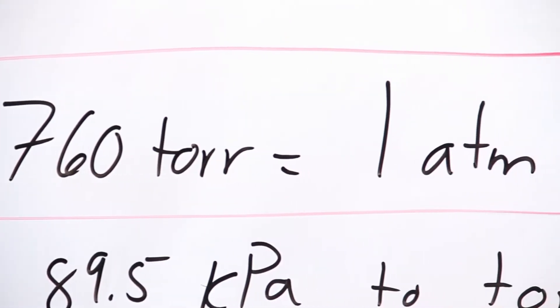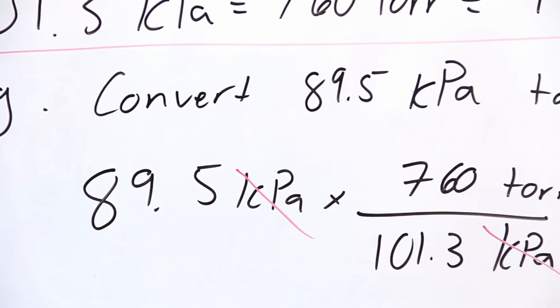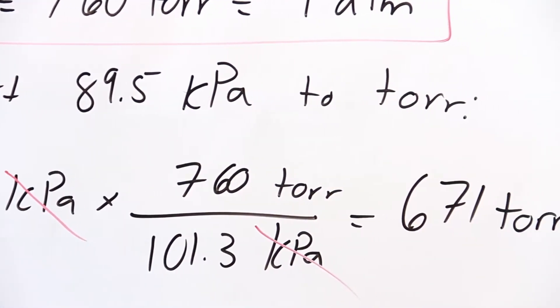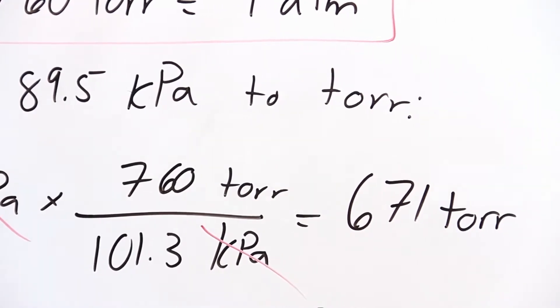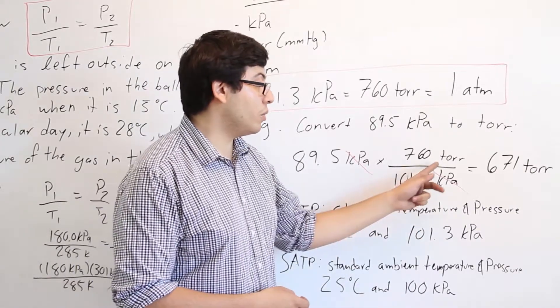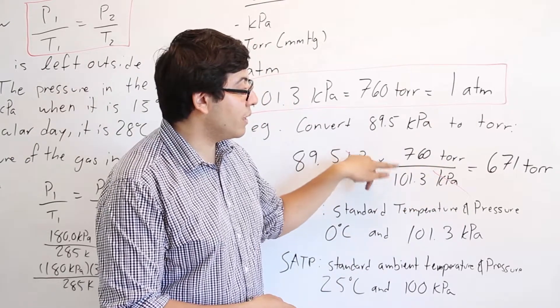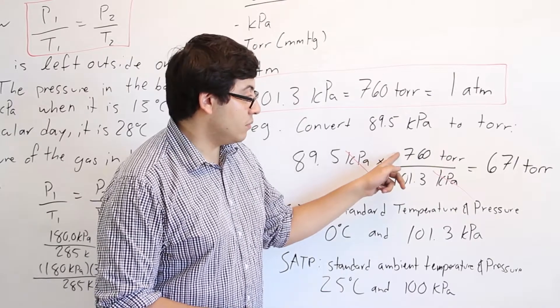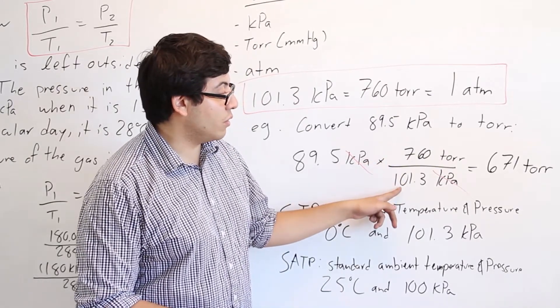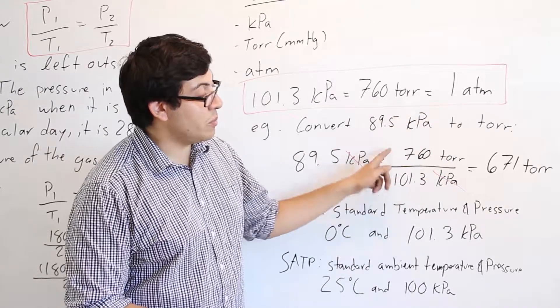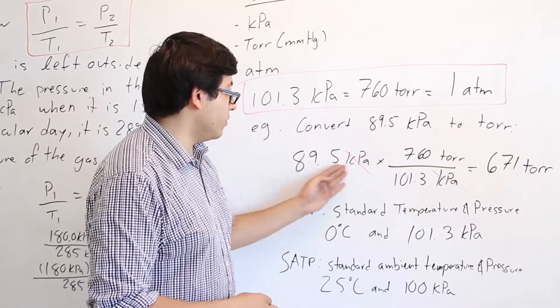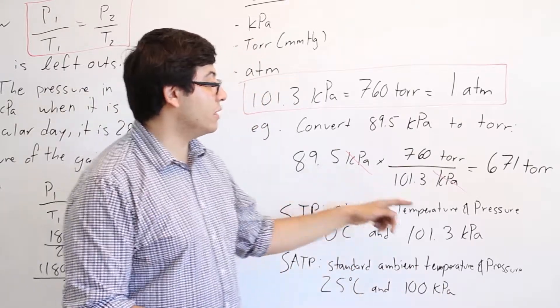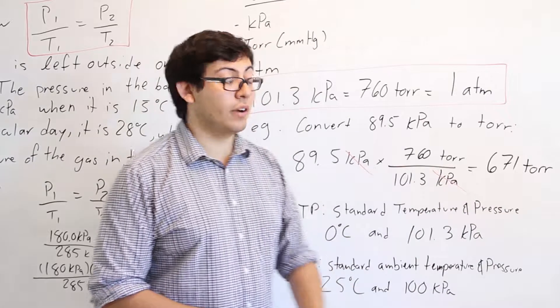So let's do a quick example. So if you have 89.5 kilopascals of pressure, and you want to convert that into say torr, you just need a conversion factor. So if kilopascals is the unit you're trying to get rid of, you should put it in the denominator, and you're trying to introduce torr, so put it in the numerator. So we're going to multiply by torr over kilopascals. This number is essentially one, because remember, 760 torr is equal to 101.3 kilopascals from this. So when we multiply by one, we're not changing the value of the number, we're just changing the units. So that causes the kilopascals to cross out, and we get 671 torr as our answer.